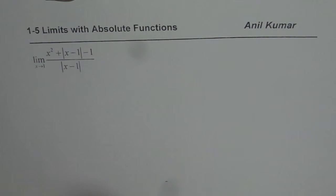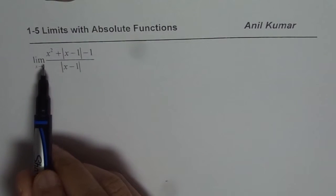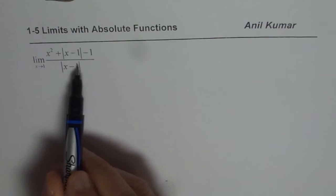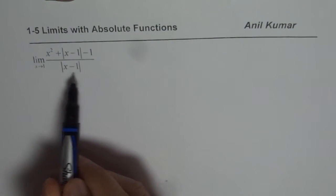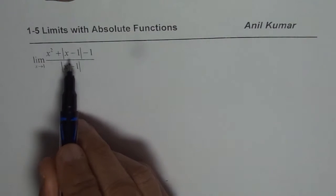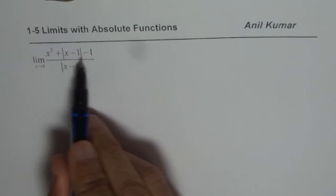So here the question before us is that we need to find limit of the function x squared plus absolute x minus 1 minus 1 over x minus 1 absolute value when x is approaching 1. So first our strategy is define what absolute function is.